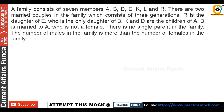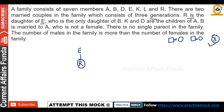Given: a family consists of seven members A, B, D, E, K, L, and R. There are two married couples in the family with three generations. R is the daughter of E, so R is female. E is the only daughter of B, so E is female. K and D are the children of A, so A has two children K and D. B is married to A — and since B is not female, B is male, making A female.